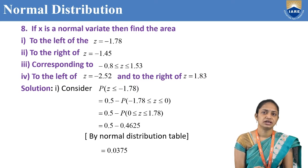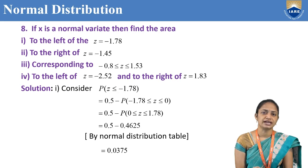First question: if x is a normal variate, find the area. First, to the left of z = -1.78. Second, to the right of z = -1.45. Third, corresponding to -0.8 ≤ z ≤ 1.53. Fourth, to the left of z = -2.52 and to the right of z = 1.83.